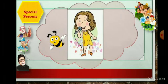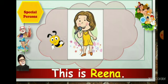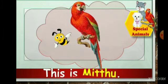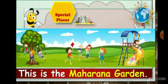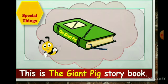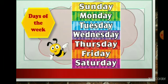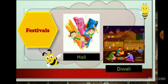Let's see some examples. This is Rina. Here, Rina is a name of a girl. This is Mittu. Mittu is a name of this pet animal. This is the Maharana garden. Here, this garden has a special name — Maharana garden. This is the Giant Pig story book. Here, this story book has a name — The Giant Pig. The days of the week, months of the year and festivals, they are written in capitals.